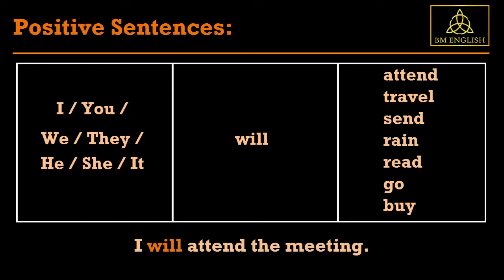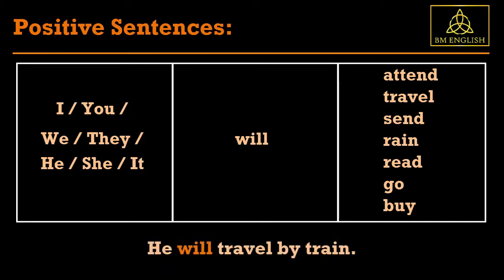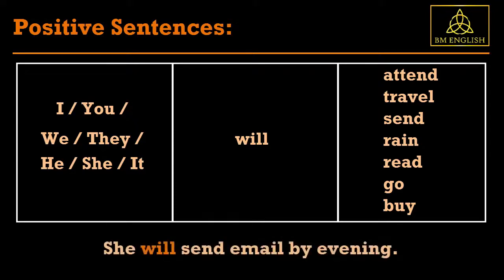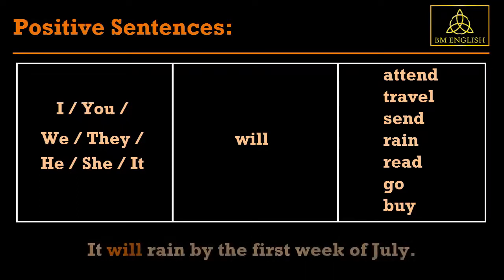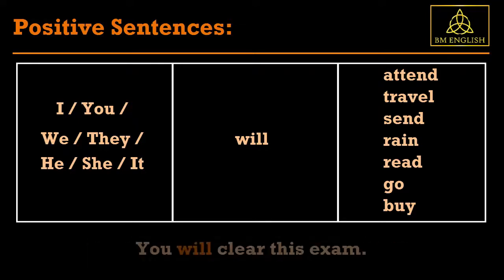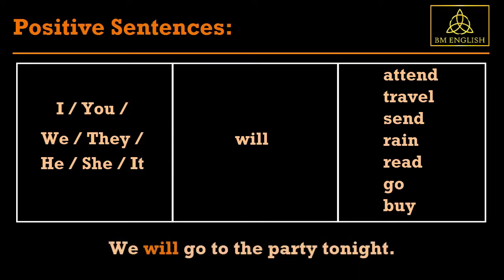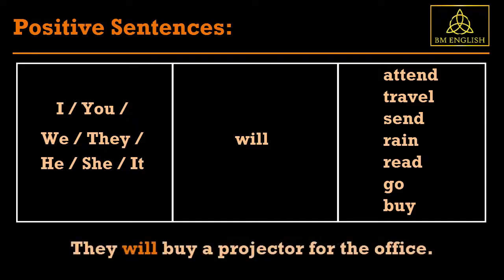For examples: I will attend the meeting. He will travel by train. She will send email by evening. It will rain by the first week of July. You will clear this exam. We will go to the party tonight. They will buy a projector for the office.